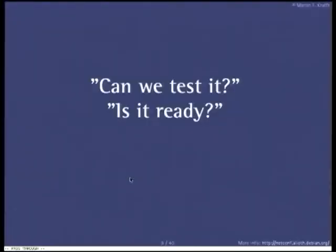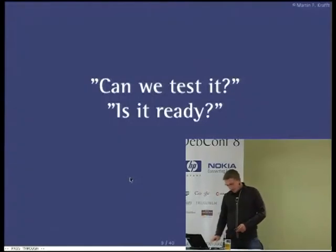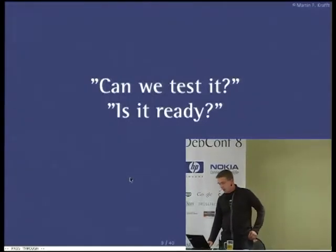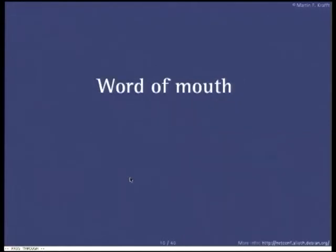Question: Where is the code? If you go to netconf.alioth.debian.org, that's the home page and it has links to the Git repository where the code is maintained. It's one of those questions I've heard a lot in the last two weeks at this conference: where is it, can we test it, is it ready? Well, if you ask some people here, they'll say it's paperware — Duke Nukem Forever, you keep talking about it.